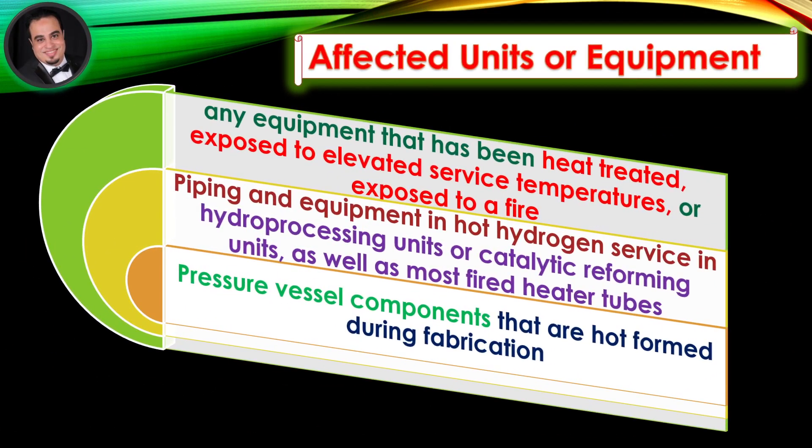Affected units or equipment: Decarburization can occur in almost any equipment that has been heat-treated, exposed to elevated service temperatures, or exposed to a fire. Piping and equipment in hot hydrogen service in hydroprocessing units or catalytic reforming units, as well as most fired heater tubes, can be decarburized in service.